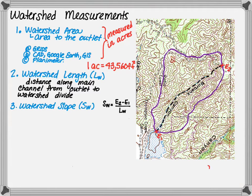The third measurement is the watershed slope. It is determined by taking E2 at the basin divide and subtracting it from E1 at the outlet and dividing it by the watershed length. The watershed slope is dimensionless.